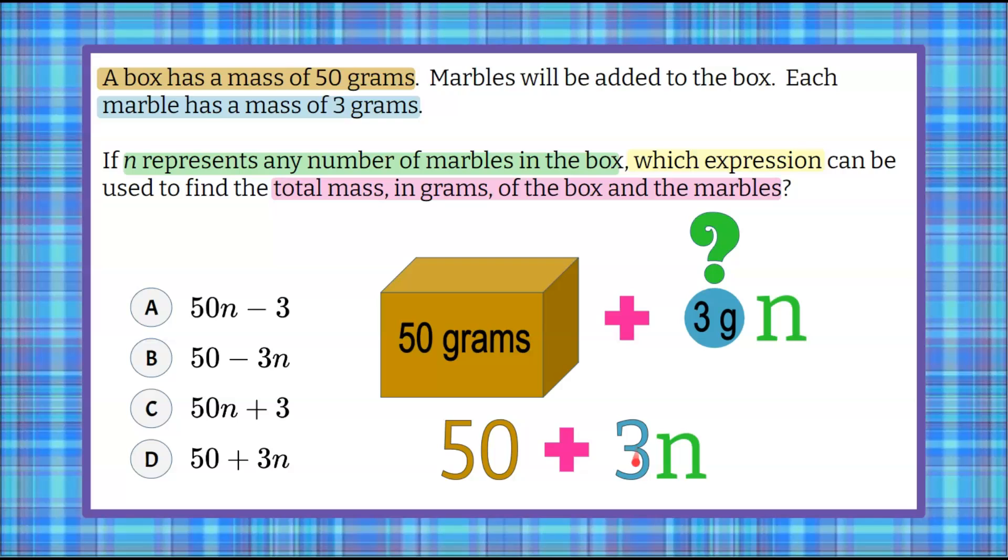But each of these is going to weigh 3. So 50 for the box, add 3 times the unknown number of marbles. Now we're ready to go look at our expressions. So I look over here, and I can see that our answer choice is D. 50 for the box, add 3 times the number of marbles.